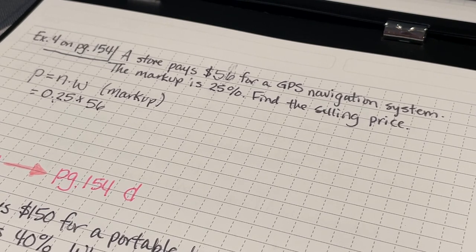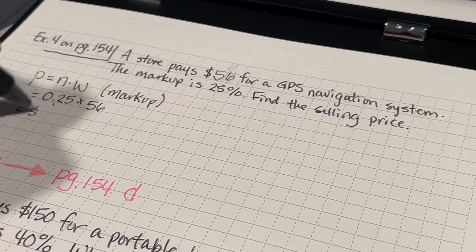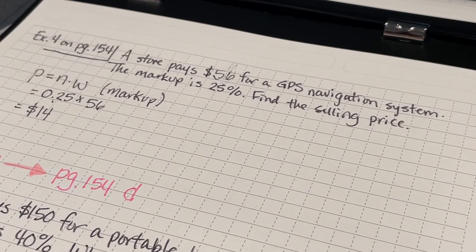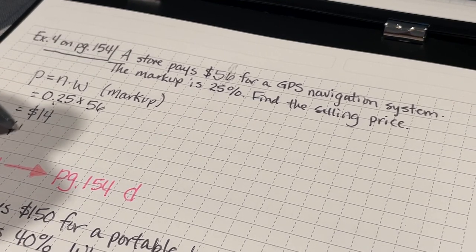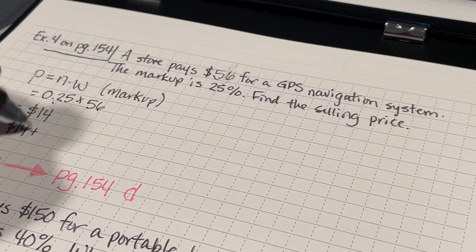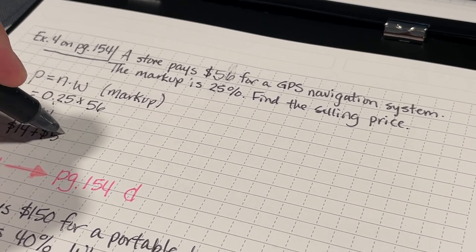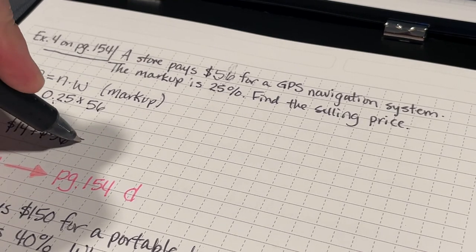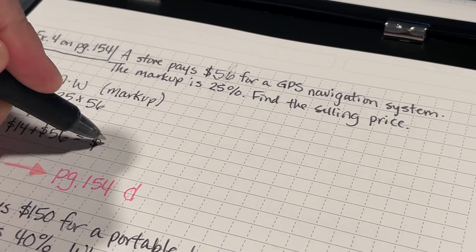And I'm going to multiply that by the cost that the store pays for the GPS system. Here's an example of a store pays for something to sell to you. They mark it up by a certain percent in order for them to make a profit. 0.25 times 56 is going to be $14. Now I need to take that $14 and add it on to the price that they purchased the GPS system for. Now I'm going to get a total cost of $70.